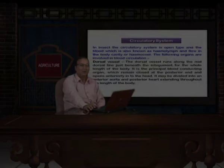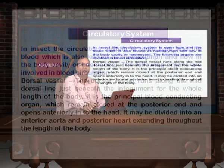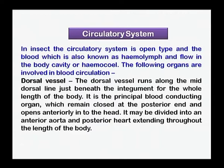The circulatory system in insects is open type. Open type means the blood, technically known as hemolymph, flows freely in the body cavity, also known as the hemocele. There are no tubes like in higher animals where blood flows in arteries or veins — here the system is open type, whereas in other animals it is closed type.